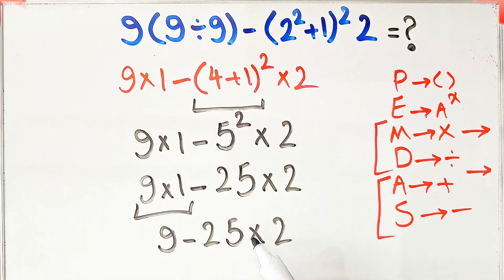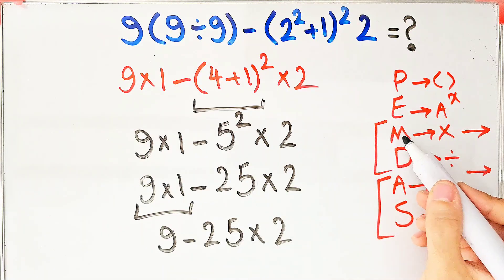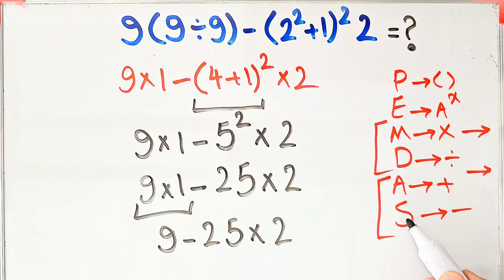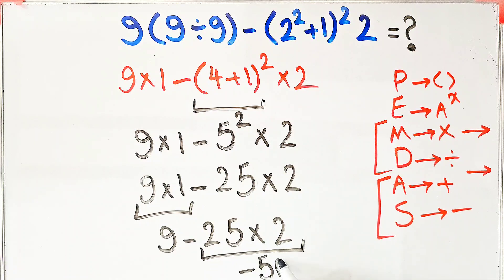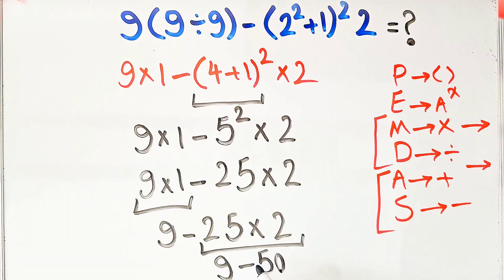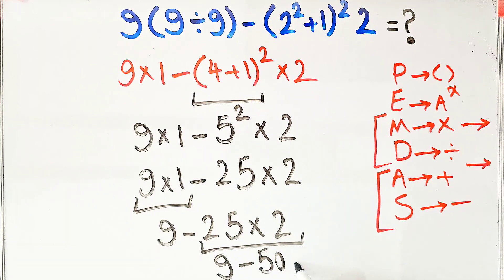Now we have nine minus twenty-five, then times two. We have subtraction and multiplication. First we do the multiplication because multiplication has higher priority. Negative twenty-five times two equals negative fifty. Now we have nine minus fifty, and the final answer of this question equals negative forty-one.